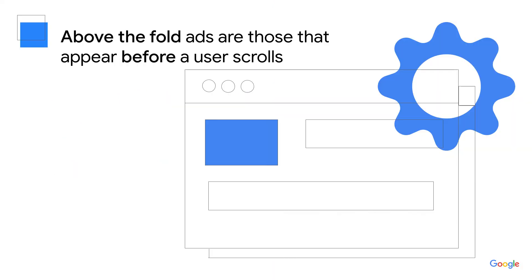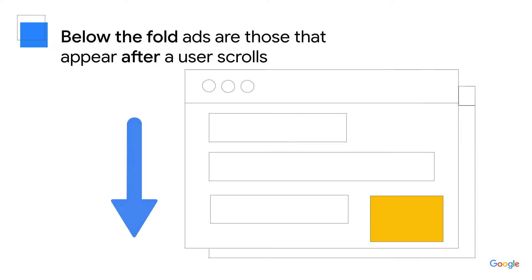Let's start with some basics. Your site is divided into a few key areas. The main areas are above the fold — this is all the content a site visitor sees before they start to scroll on the page. Below the fold refers to anywhere visible after a visitor starts scrolling. You'll want to consider placing ads both above and below the fold.